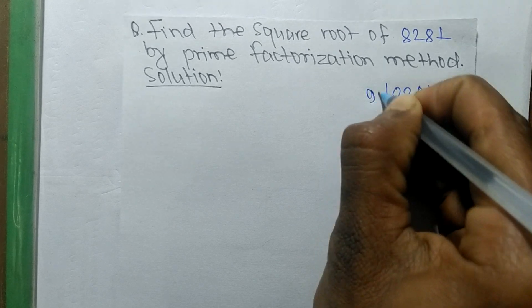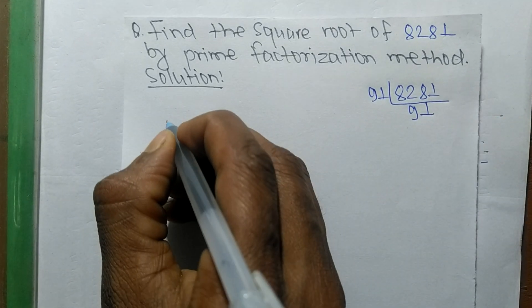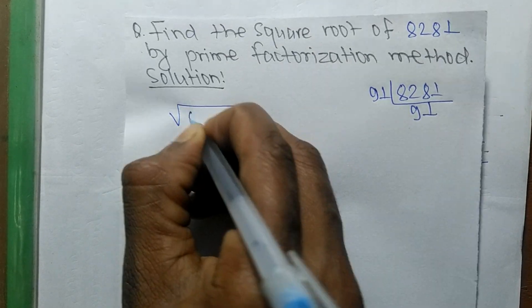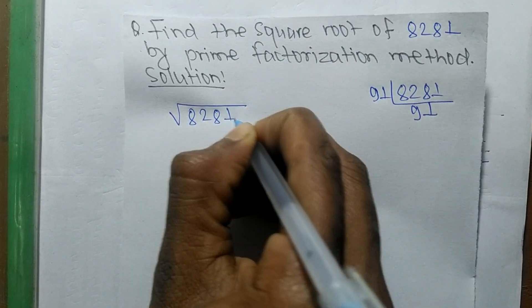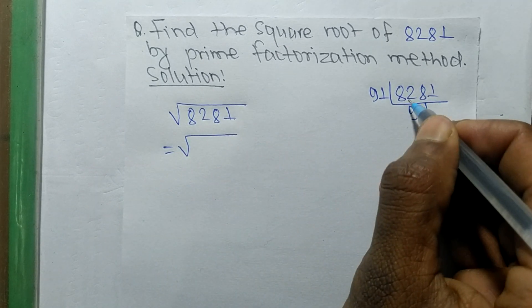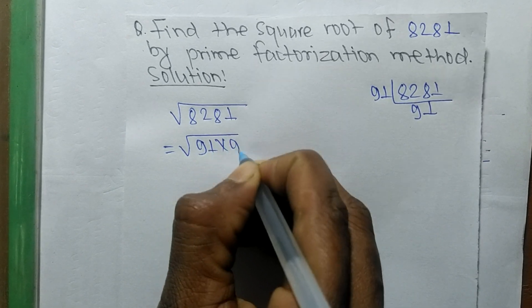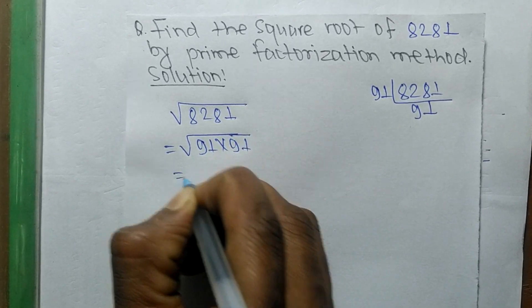It is 91 times 91. So now to find the square root of 8281, we write down the prime factors of 8281, which is 91 times 91.